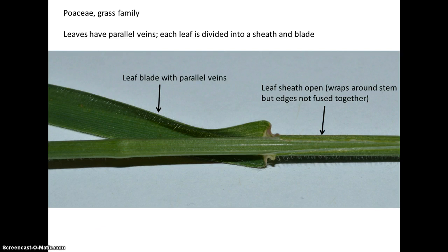Each leaf is also divided into a sheath, which wraps around the stem, and a blade, which extends from the sheath. The sheaths in the grass family are open, meaning that the edges do not fuse, as you can see in this picture. In some other families, the edges of the sheath are fused together, forming a cylinder surrounding the stem, but they are open in the grass family.